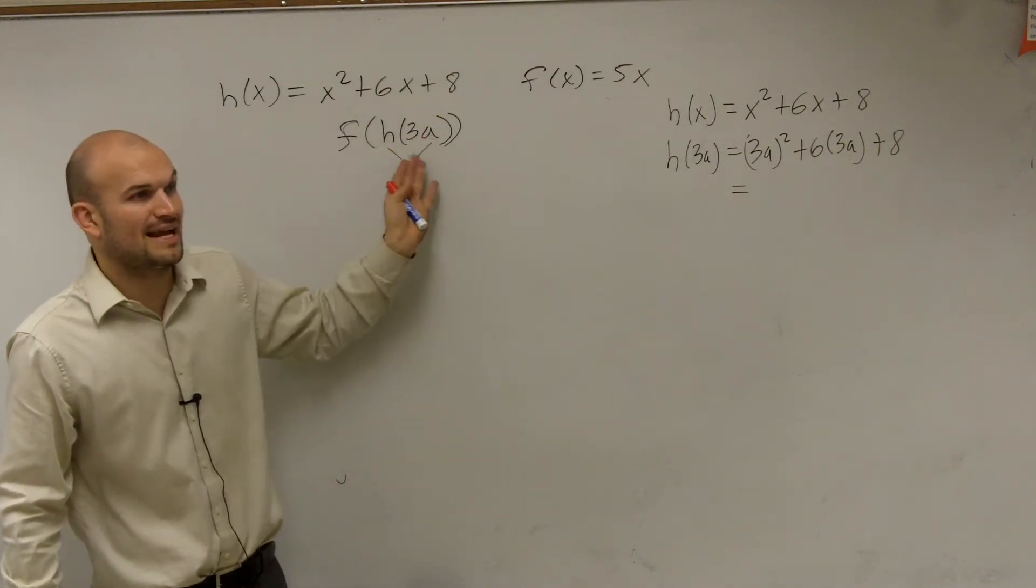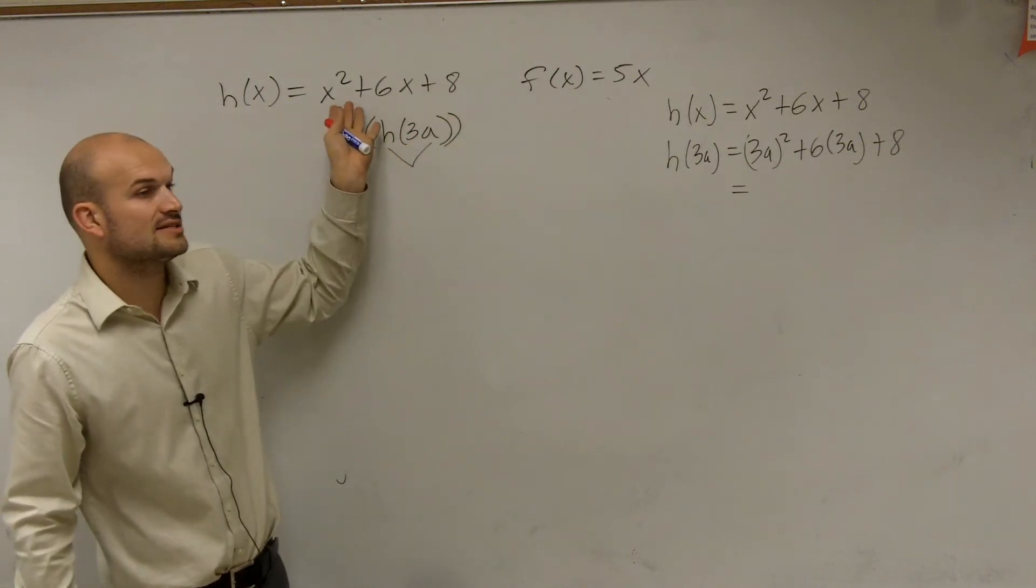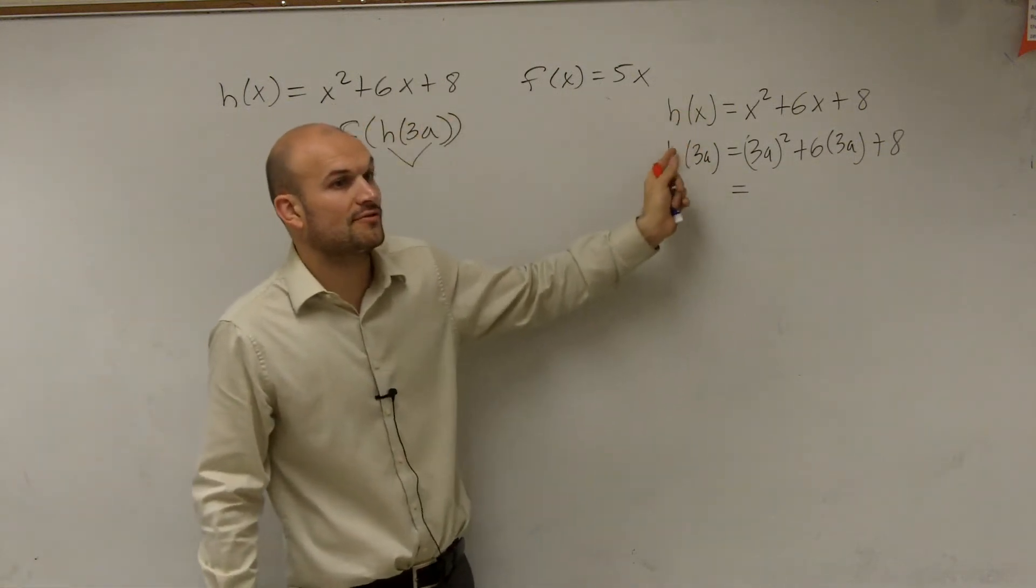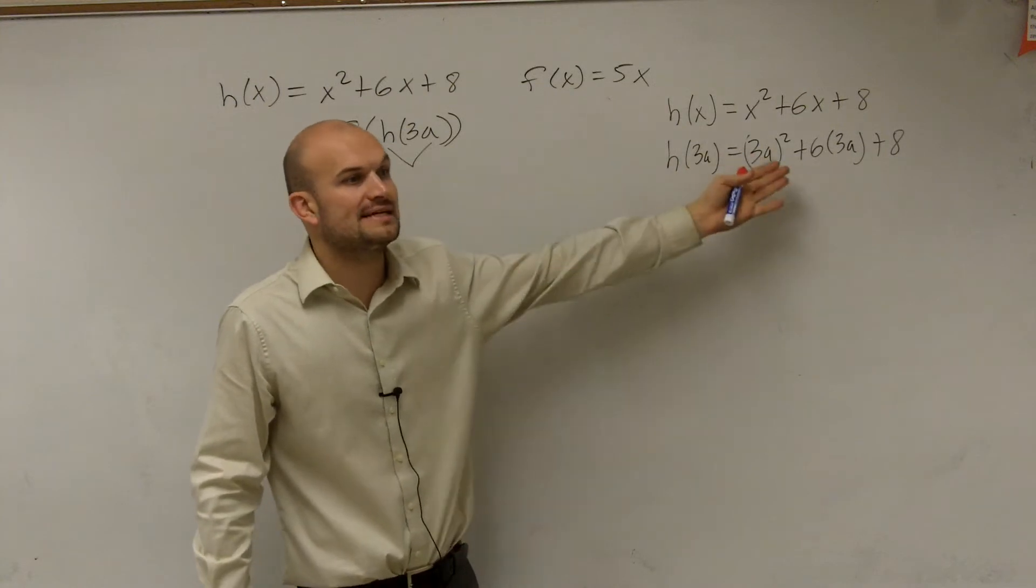So it says h of 3a. So let's figure out what h of 3a is. We know h of x is here. So if I say now it's h of 3a, you're just going to plug in your 3a wherever you see an x.